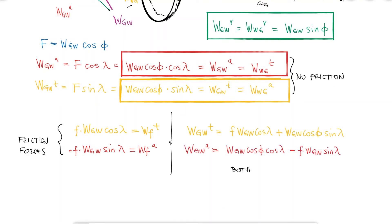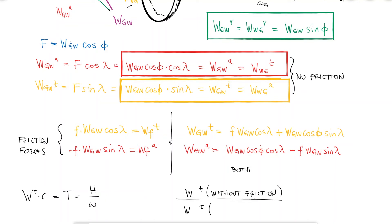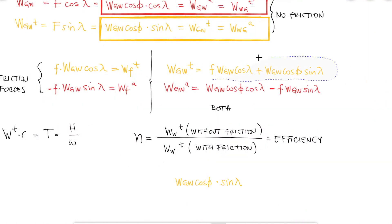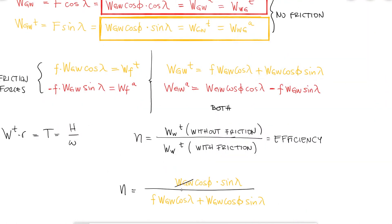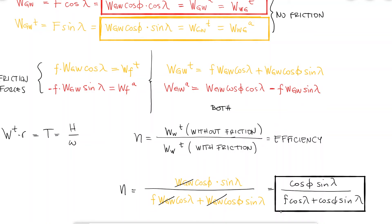Since the tangential component has a direct relationship to the torque and therefore the power, the ratio of the tangential component without and with friction yields the efficiency referred to in a previous video. This expression can be simplified using trig identities, but having it in terms of the friction coefficient, the pressure angle, and the lead angle is more than enough.